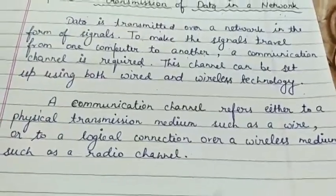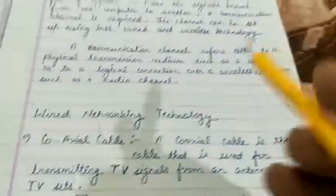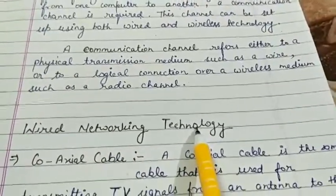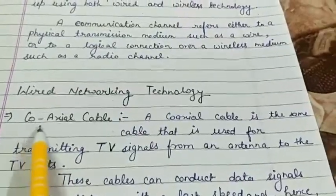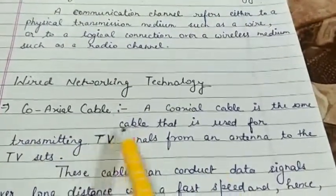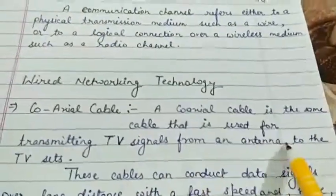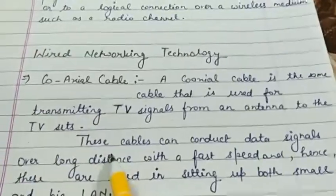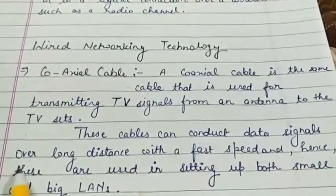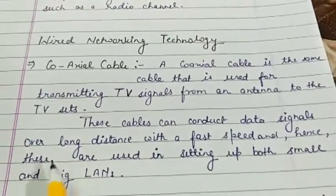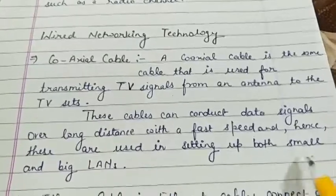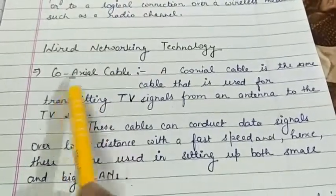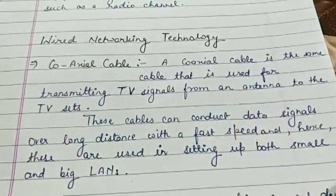Now I am going to explain the first technology: wired networking technology. A coaxial cable is the same cable that is used for transmitting TV signals from an antenna to the TV sets. These cables can conduct data signals over a long distance with a fast speed, hence these are used in setting up both small and big LANs.